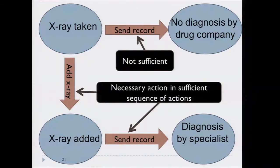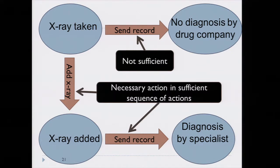Here's a candidate definition: an action is for a purpose if it is a necessary action in a sufficient sequence of actions for achieving the purpose. By this definition, the top action is definitely not for the purpose because it's not part of a sufficient sequence — you end up in a state where diagnosis is not achieved. The other two actions do satisfy this definition because they are part of a sufficient sequence for achieving the purpose, and if you remove any one of them, diagnosis would no longer be achieved. This is very close to counterfactual ideas of causality that have been explored in philosophy and, more recently in computer science, by Judea Pearl and others.